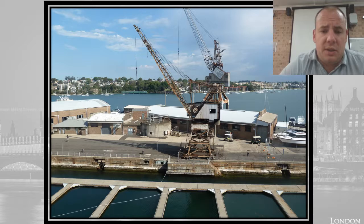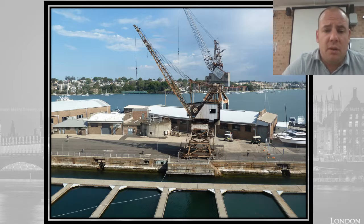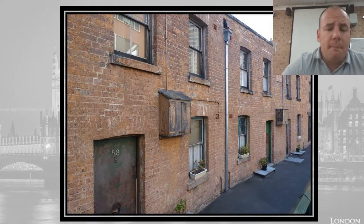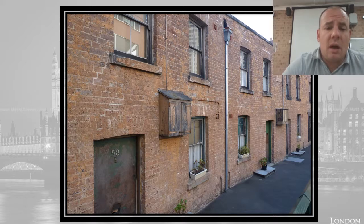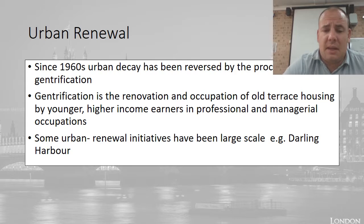Here are some pictures — this is Cockatoo Island, which shows what urban decay looks like. We've got a shipping yard with a big crane that's no longer used. And then of course in the Rocks, you can see the old terraced housing as another example of urban decay.